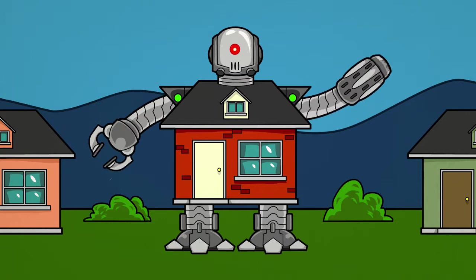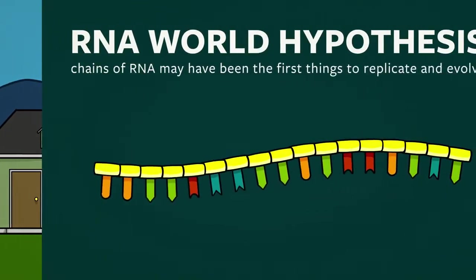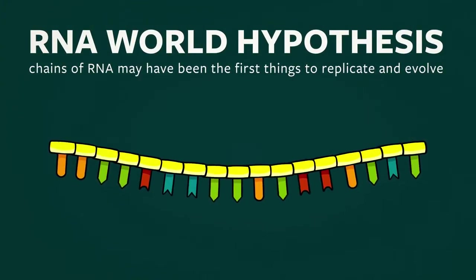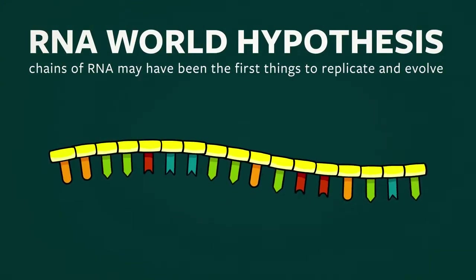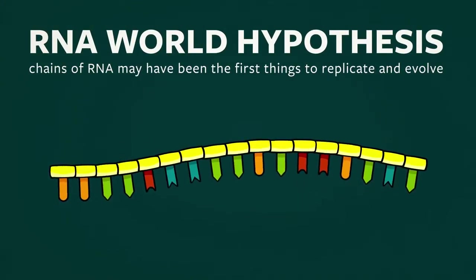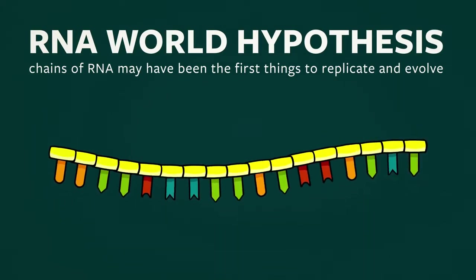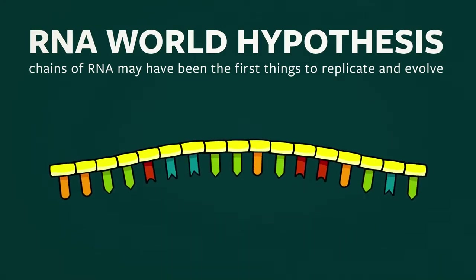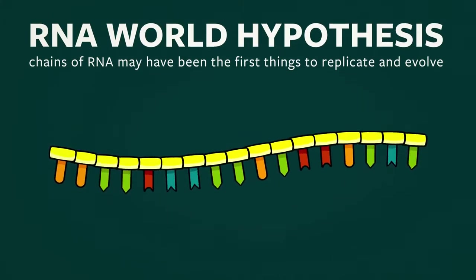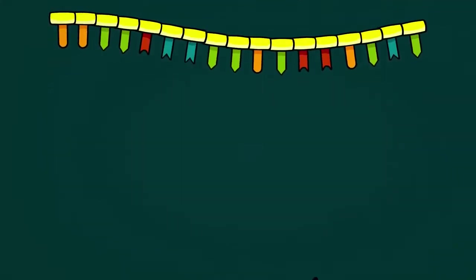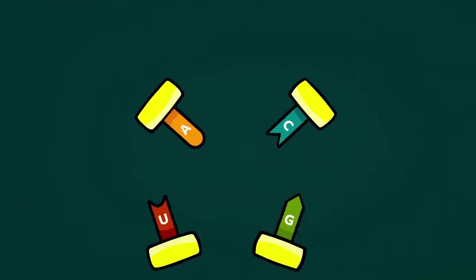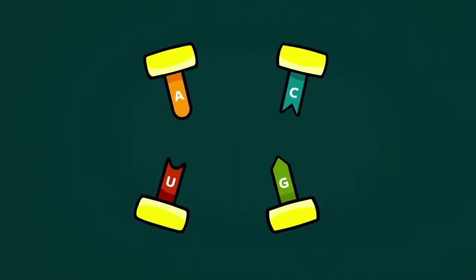To understand how RNA chains can interact with their environments, replicate, and evolve, we first need to understand the simple process of base pairing. Chains of RNA are made of nucleotides — small molecules that come in four different types labeled A, C, U, and G.